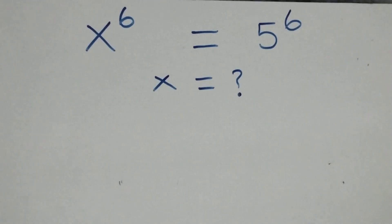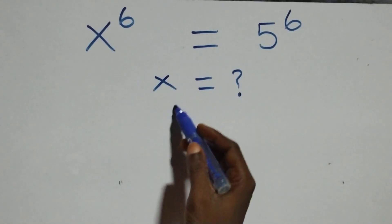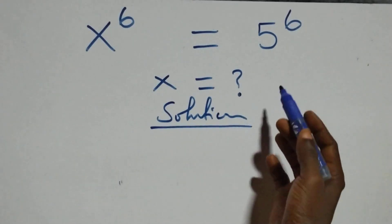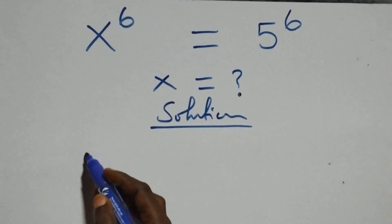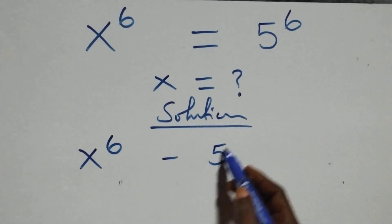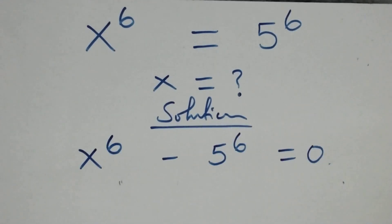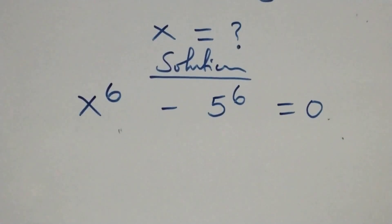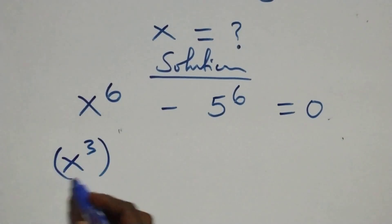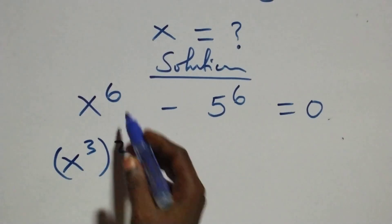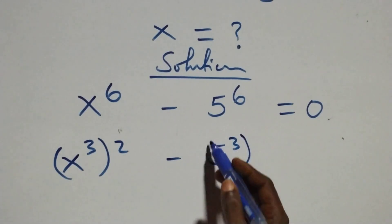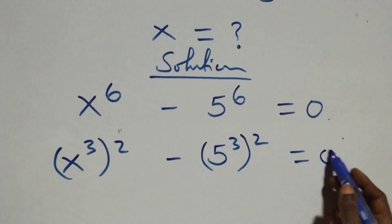Hello, you are welcome. I have to solve this nice exponential equation. We take 5 raised to power 6 to the left-hand side, so we have x raised to power 6 minus 5 raised to power 6 equals to 0.